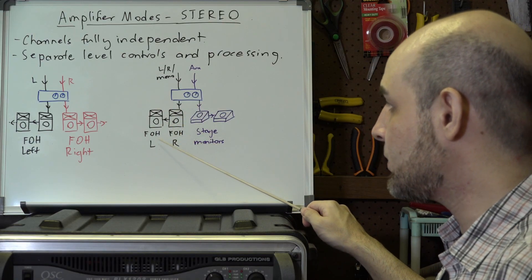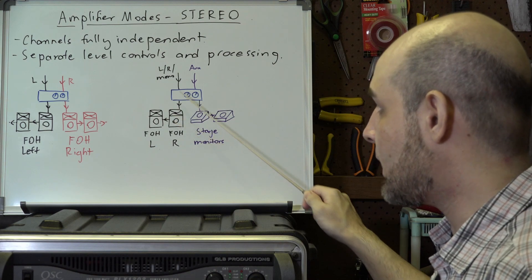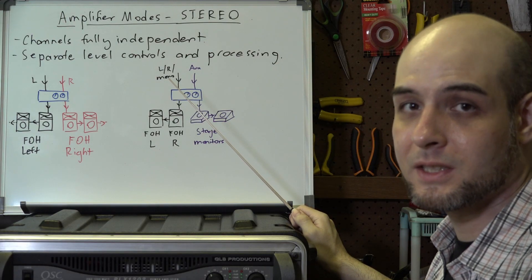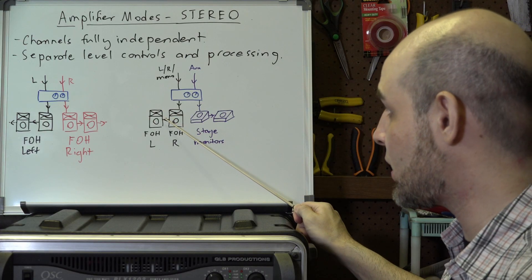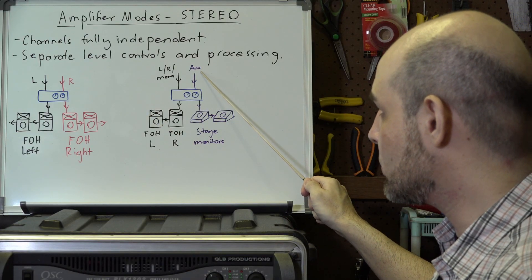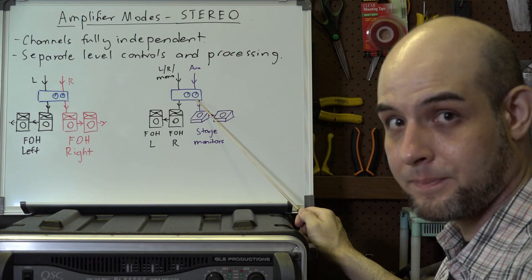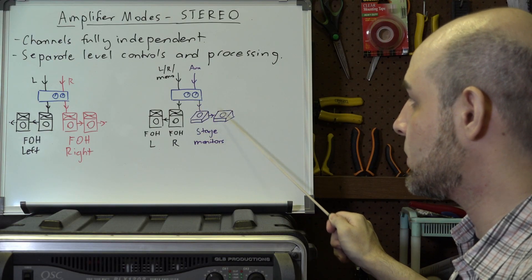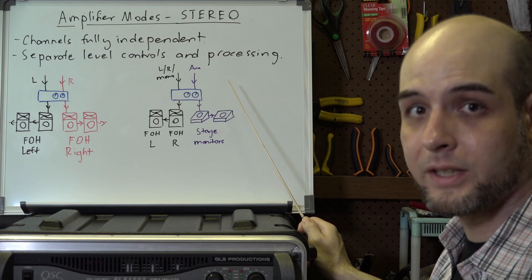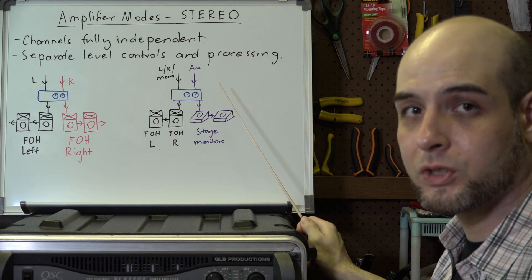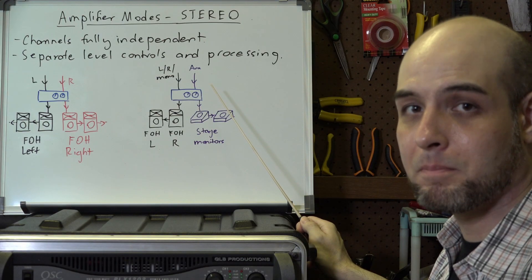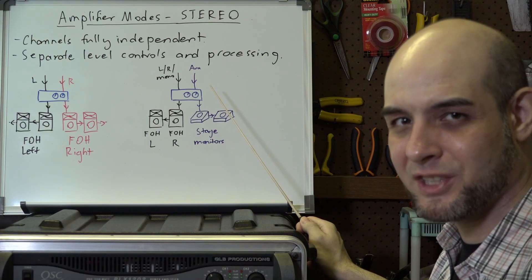Left, right, or mono comes into channel one and you then daisy chain the two front of house speakers together — they are mono, and left and right simply refers to their physical position relative to the audience. For the other channel, you connect an aux send from your mixer and use it for your stage monitors, giving you a single monitor mix. This is a very common setup for small PA systems using a single power amplifier or a powered mixer.